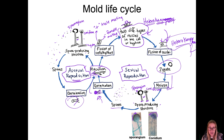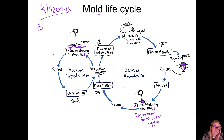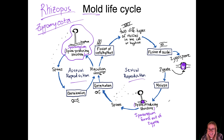Pause if you need to, because I'm about to tell you about Rhizopus. Rhizopus is a species of mold in the phylum Zygomycota. It's essentially the same life cycle, except for some key differences in the spore-producing structures for both asexual and sexual reproduction.